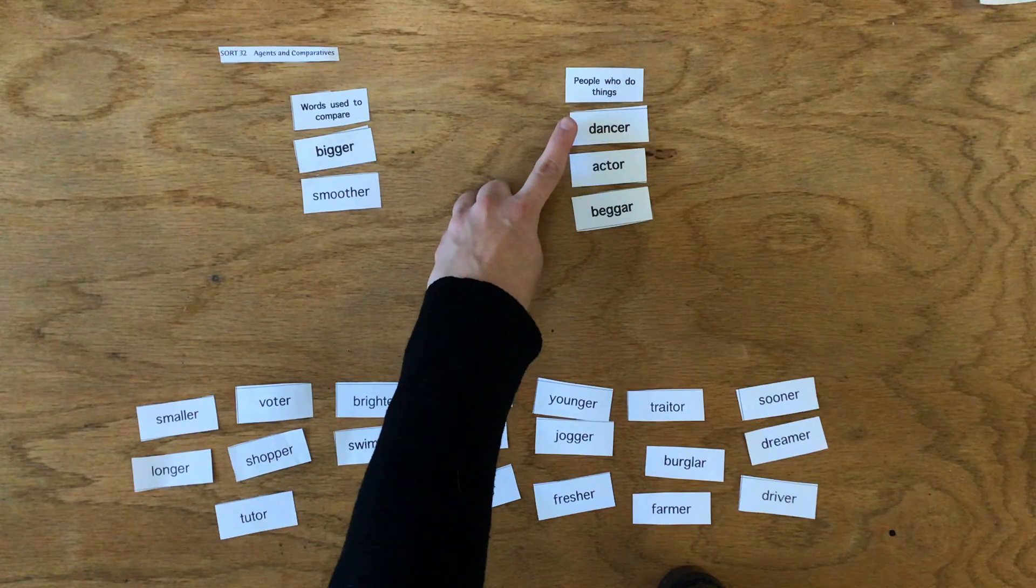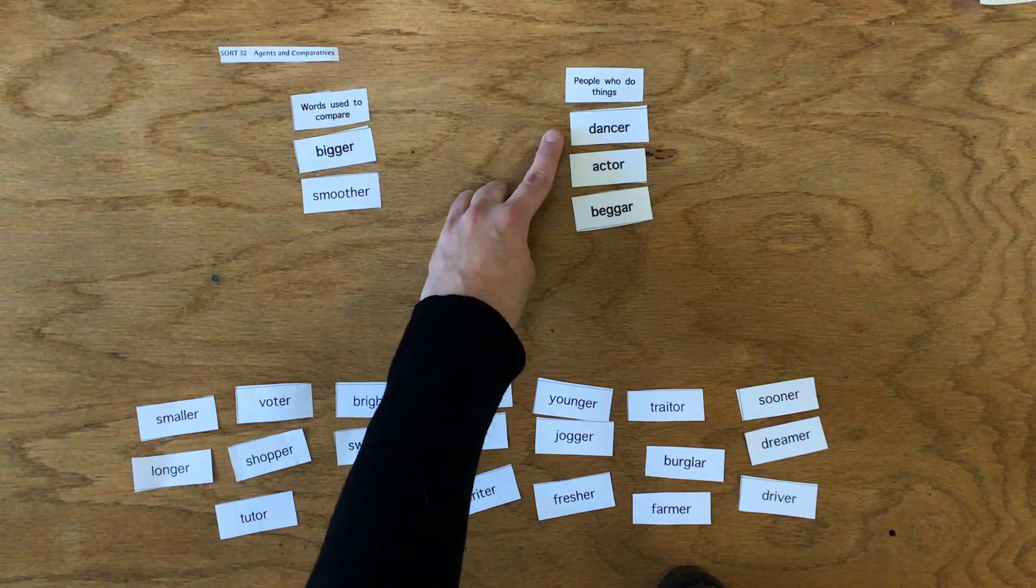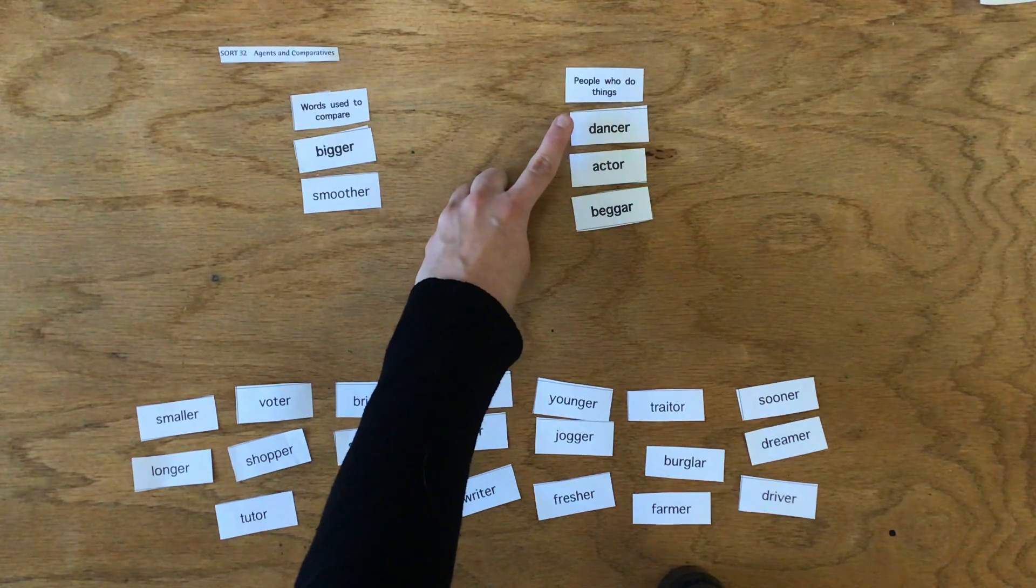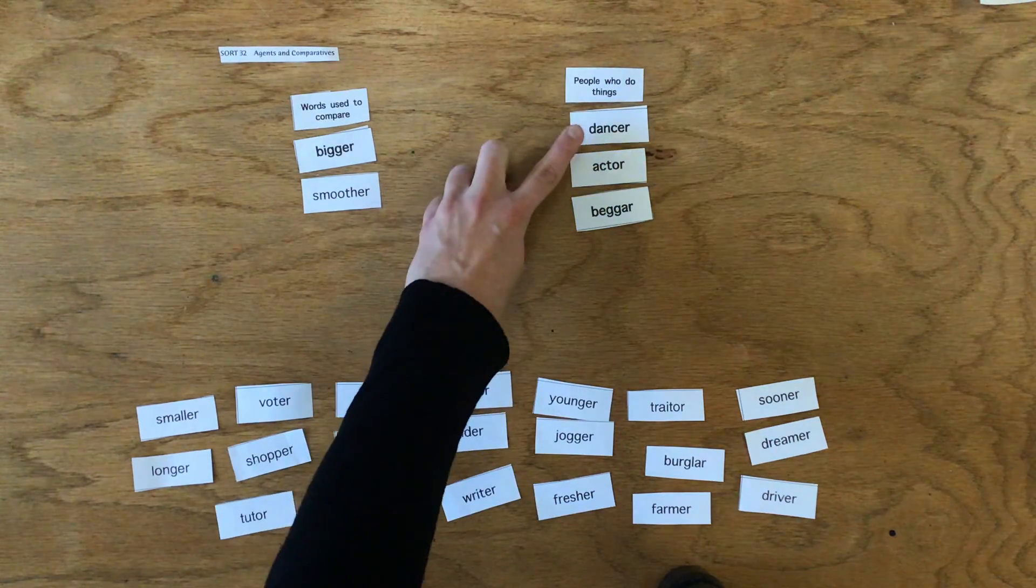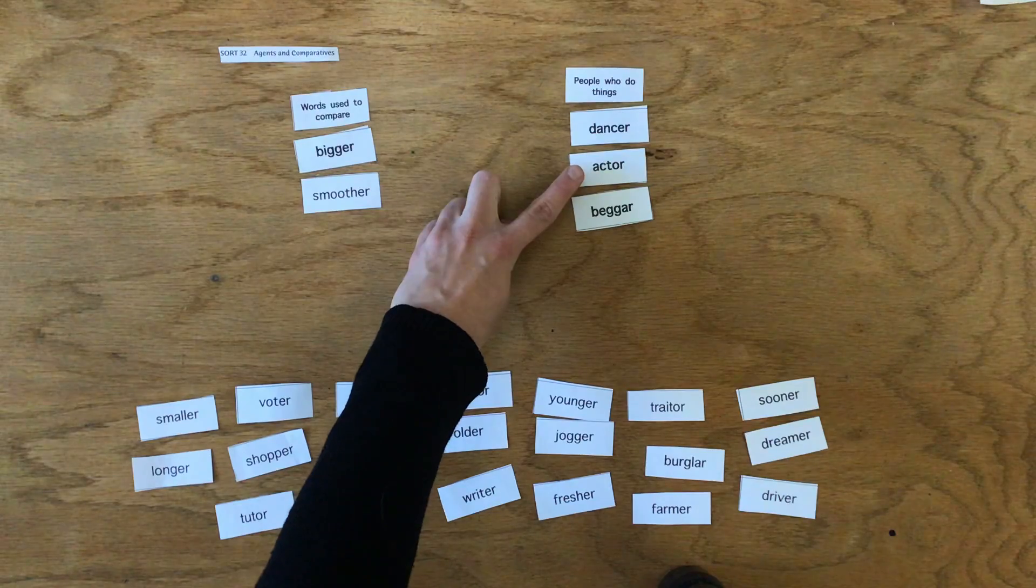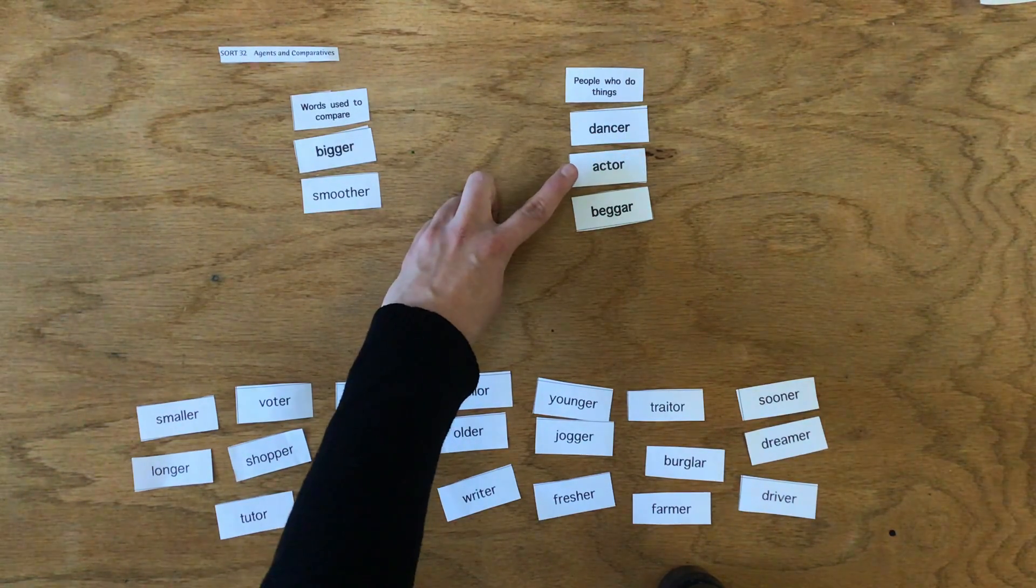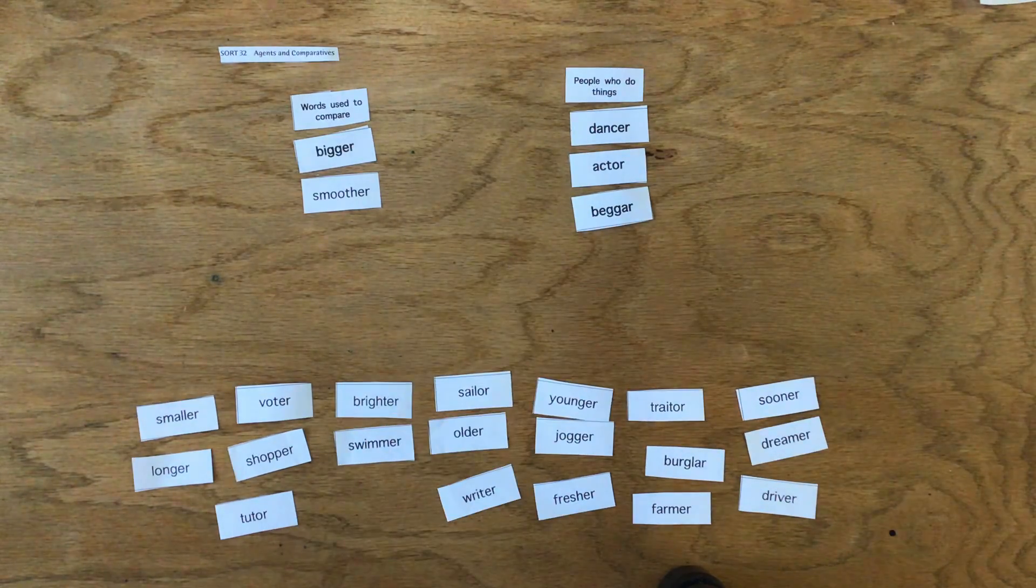On the other hand, we have things called agents, and these are nouns. They're people who do things, so it's like the title of somebody, like a dancer or an actor. A dancer is somebody who dances. An actor is somebody who acts. A beggar is somebody who begs.